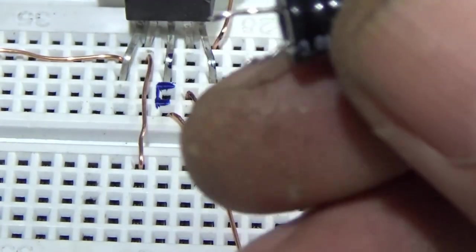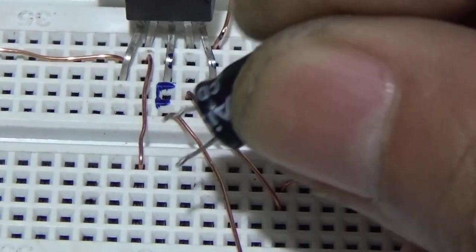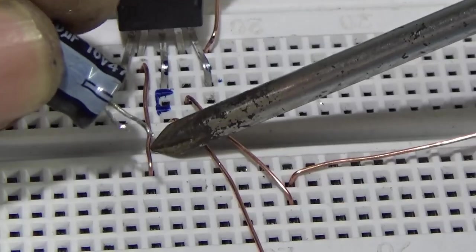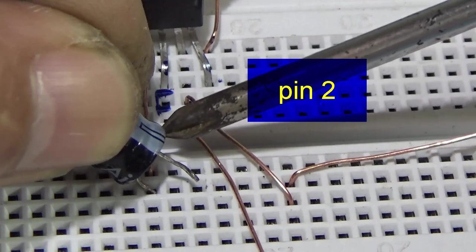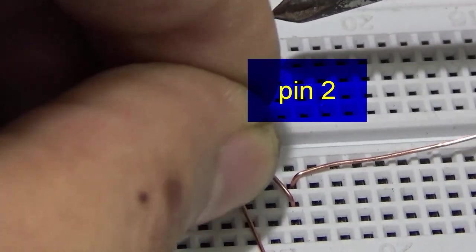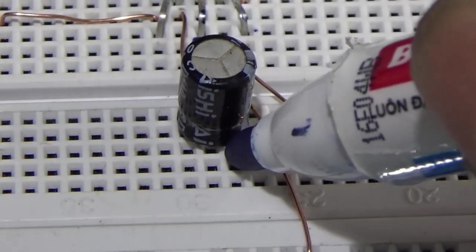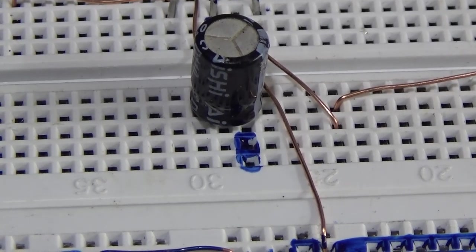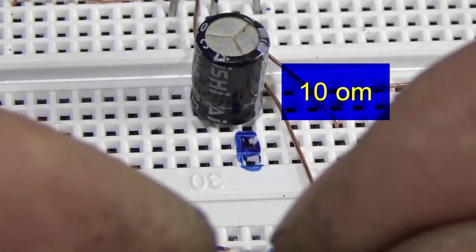Mình lấy một con tụ 470 micropara, cắm vào chân số 2, đầu dương quay về phía chân số 2. Nối tiếp với con tụ 470 micropara, mình sẽ vẽ một cái vạch màu xanh và sẽ cắm vào đấy một con điện trở 10 ohm súng mát.